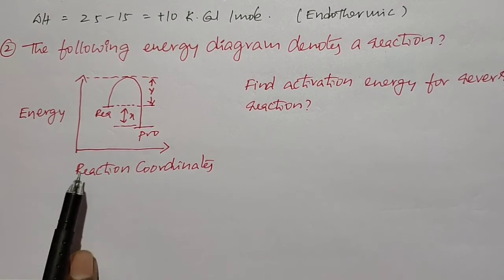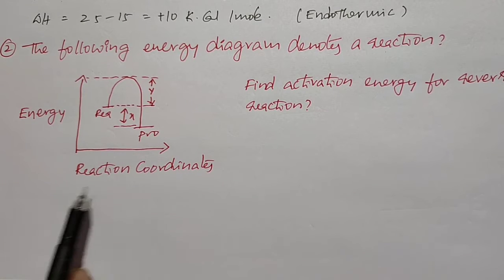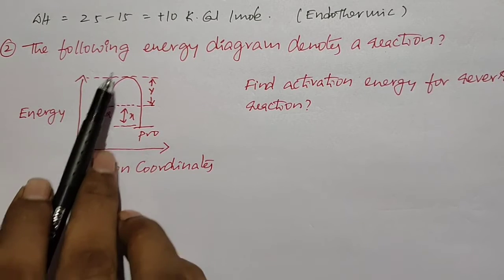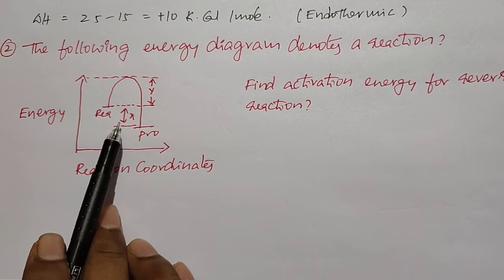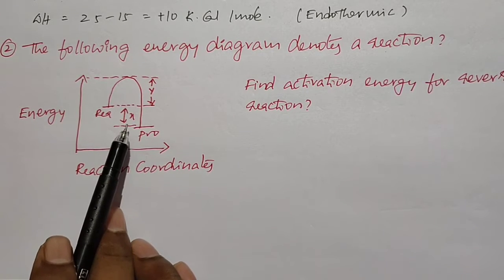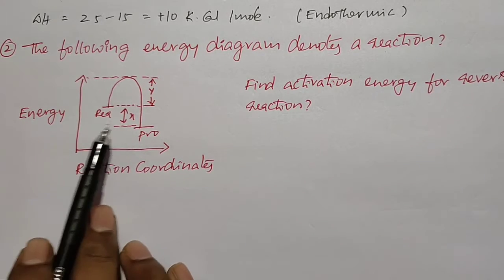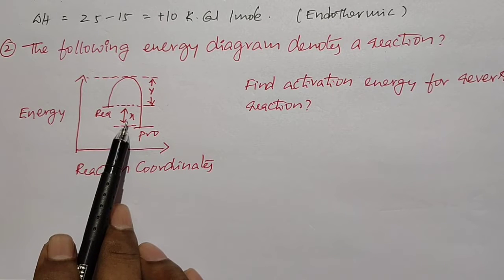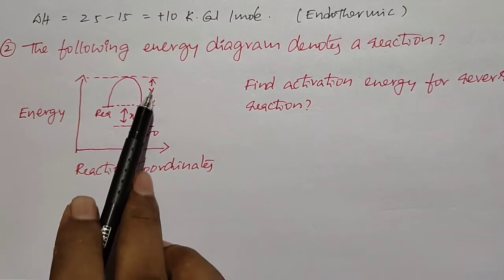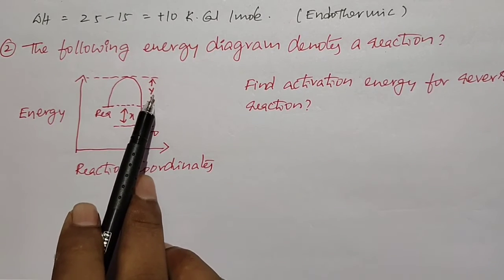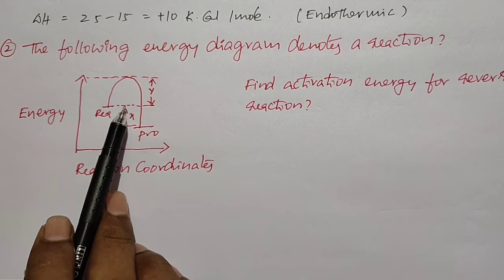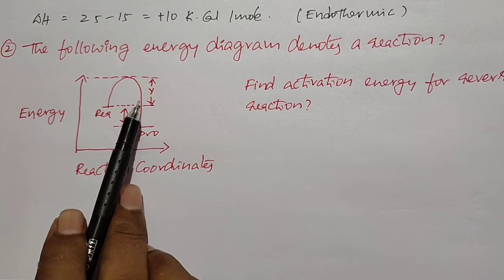When you see the diagram, on the x-axis they give the reaction coordinates, and on the y-axis they give the energy, and here you have a curve. In this curve, x is the indication of ΔH value — change in enthalpy — and y is the indication of activation energy for the forward reaction.